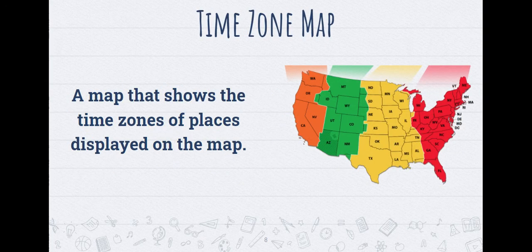Next we have a time zone map. We all know about different time zones and how it might be one time in Ohio but a different time in California because of time zones. The time zone map is just going to show us where those time zones are and where they kind of cut off and change.